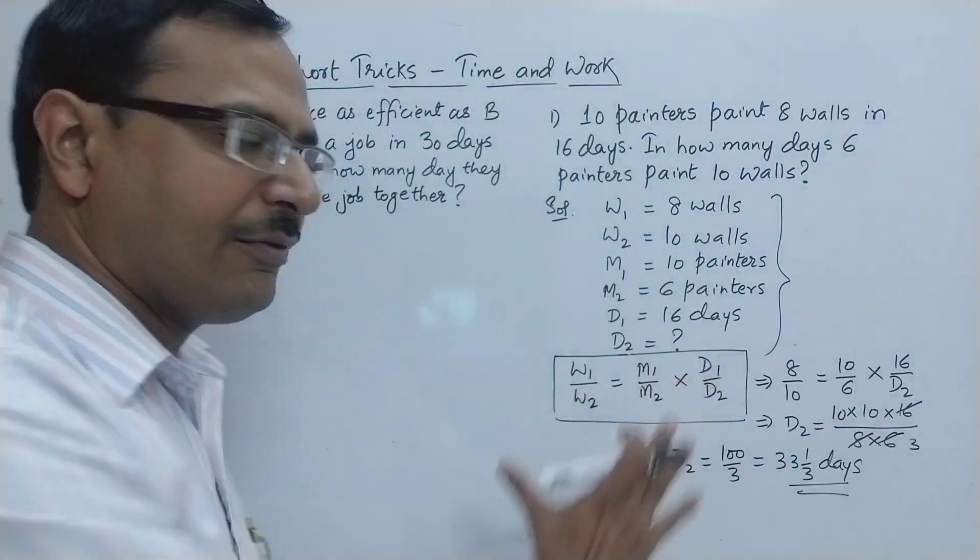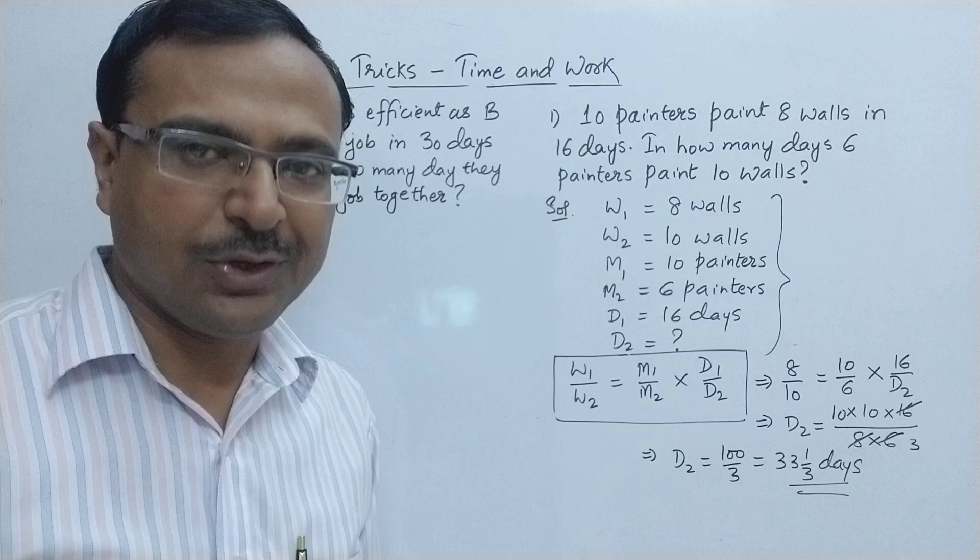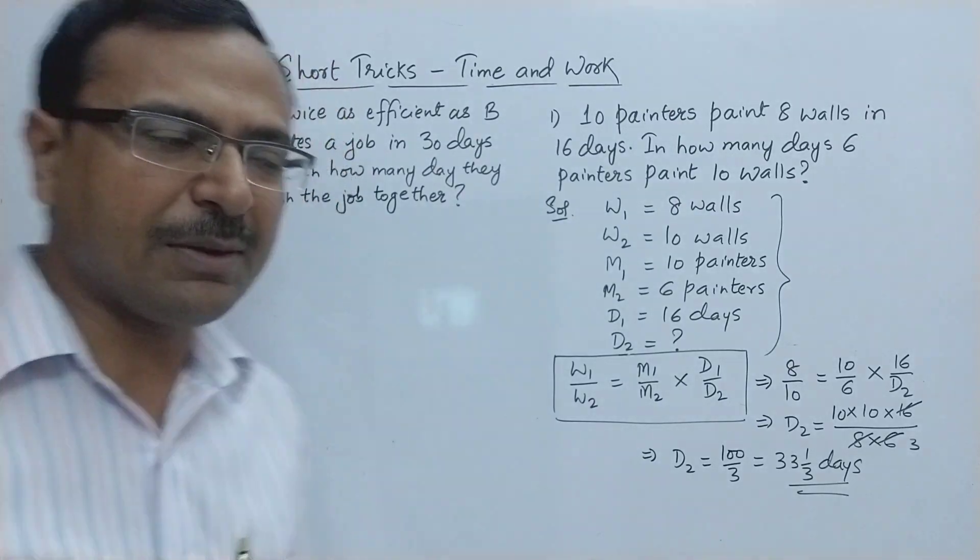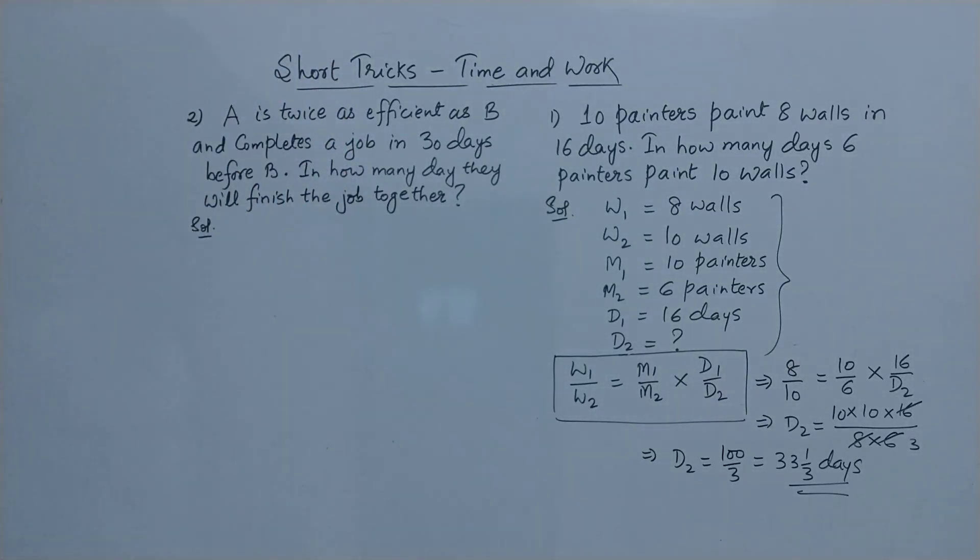So this shortcut will work wonders for you in competitions. Let's see one more question of a slightly different nature. Here we have two persons A and B and it is given that A is twice as efficient as B and can complete a job in 30 days before B. Obviously if A is twice as efficient as B then he will be completing the job before B. So in how many days will they finish the work if they work together?